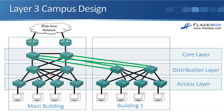Spanning tree is a necessary evil. The bad side is that it tends to shut down half of your links and is also very slow to recover from failure. It still does good things — you still need it because a layer 2 loop would basically bring your network down. So spanning tree prevents layer 2 loops, but it's slow to recover from failures and shuts down half your links.